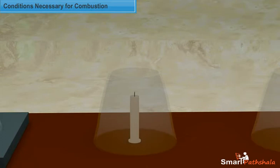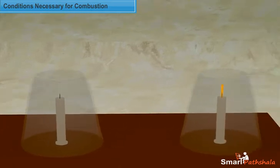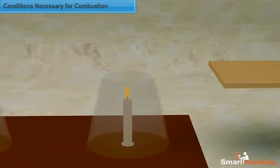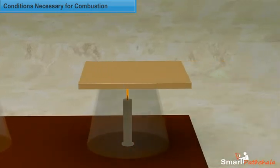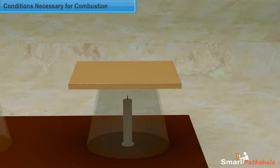Now, light the candle again and place it back, and cover the top of the chimney with a wooden plank. We observe that the flame turns off, and this is due to the absence of air around.